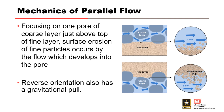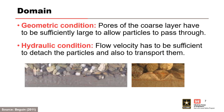Focusing on one pore of the coarse layer just above the top of the fine layer, surface erosion of fine particles occurs by the parallel flow which develops into the pore. The reverse orientation also has a gravitational component. The domain for soil contact erosion is defined by a geometric condition in which pores of the coarse layer have to be sufficiently large to allow particles to pass through, and a hydraulic condition in which the flow velocity has to be sufficient to detach and transport the particles. Continuous erosion modifies the interface geometry and gradation.